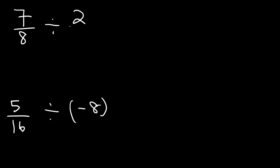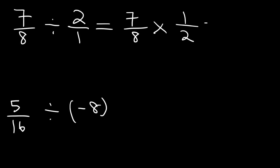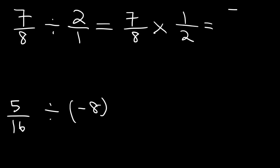Let's start with the first one. Write 2 as a fraction, as 2 over 1. Keep the first fraction the same, change division to multiplication, and flip the second fraction. Multiply across: 7 times 1 is 7, and 8 times 2 is 16. So the answer is 7 over 16. We can't simplify this fraction, so that's it.